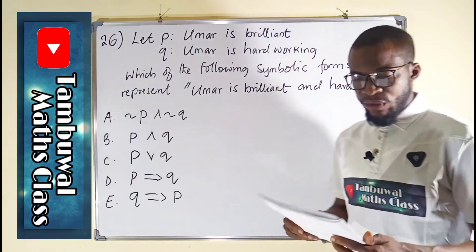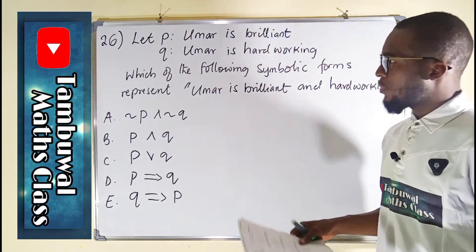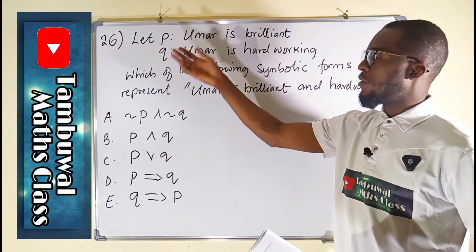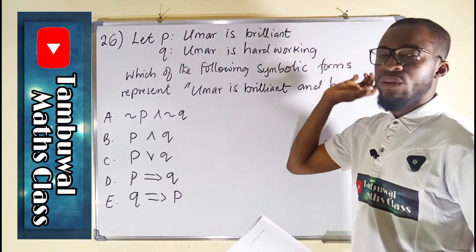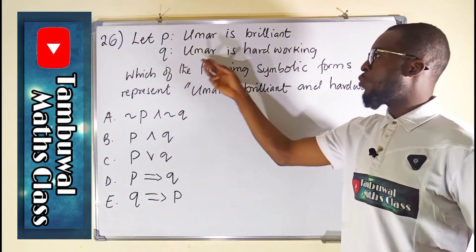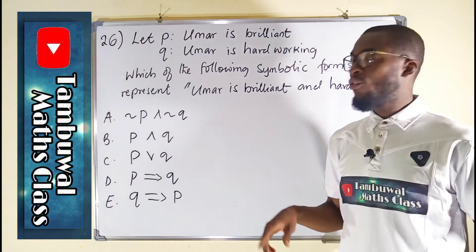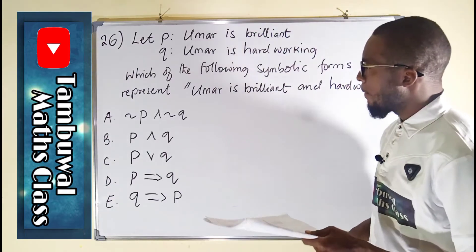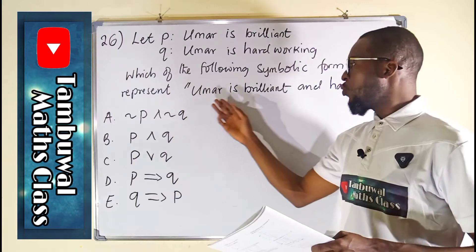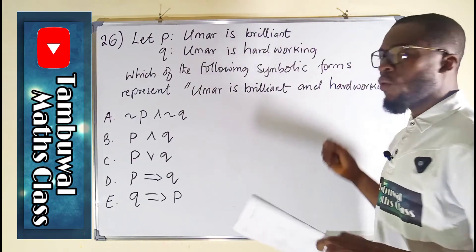Question number 26 is also a logical reasoning question. It says let P stand for 'Umar is brilliant' while Q stands for 'Umar is hard-working.' Which of the following symbolic forms represents 'Umar is brilliant and hard-working'?